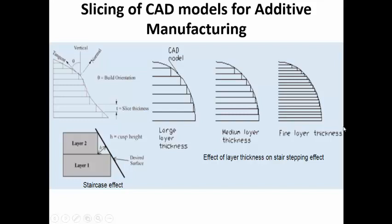Since we are building this component layer by layer, if you take layer 1 and layer 2 and the two layers are ending exactly at the same point, then you are going to get a vertical surface. Since the layers are usually in the form of a liquid or some other material, the profile may not be exactly smooth, but to a reasonable level it will be vertical and satisfactory. However, if you have an inclined surface or any other kind of profile, the surface generated by the additive manufacturing process and the required surface may not be the same.